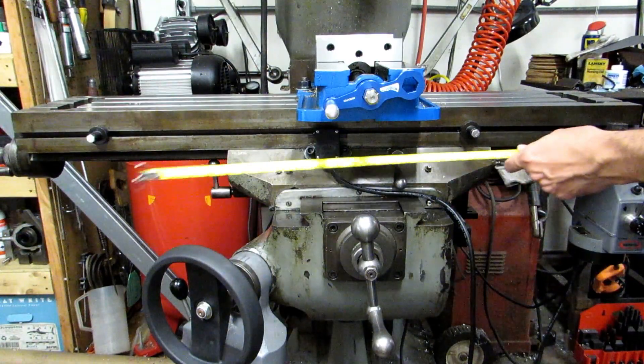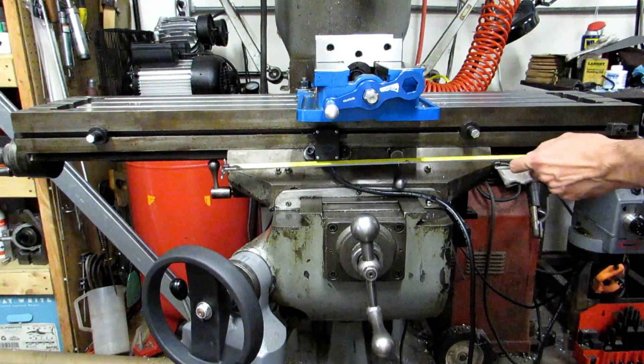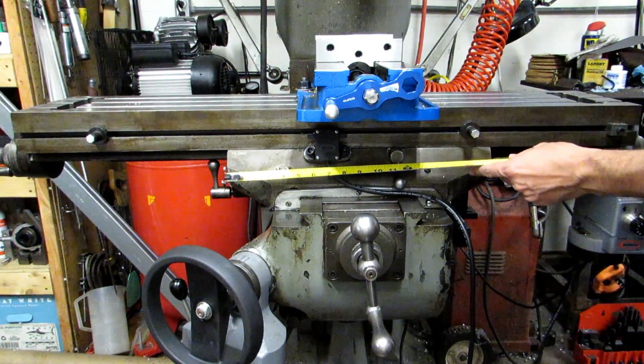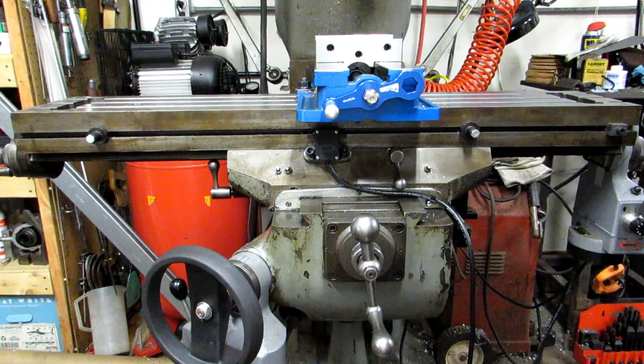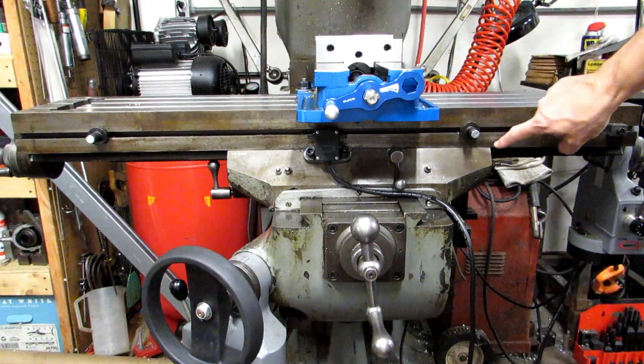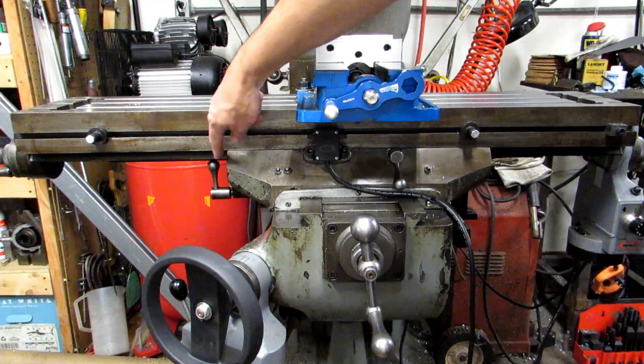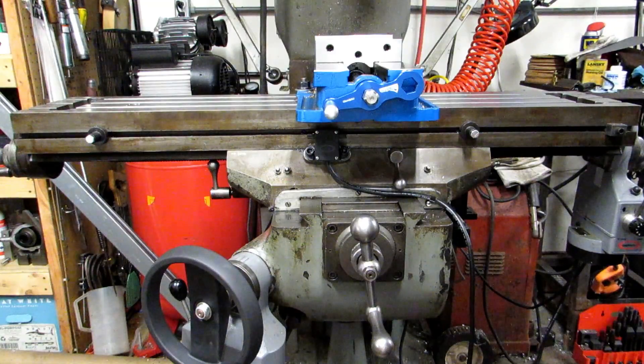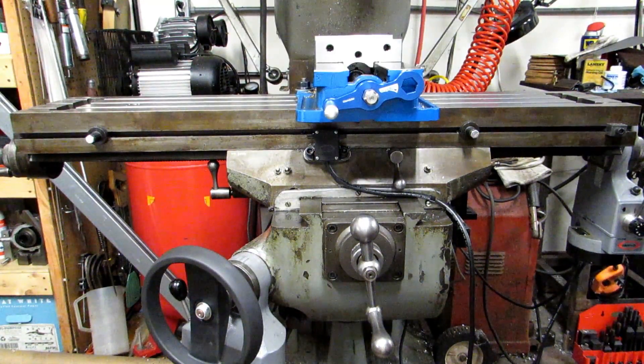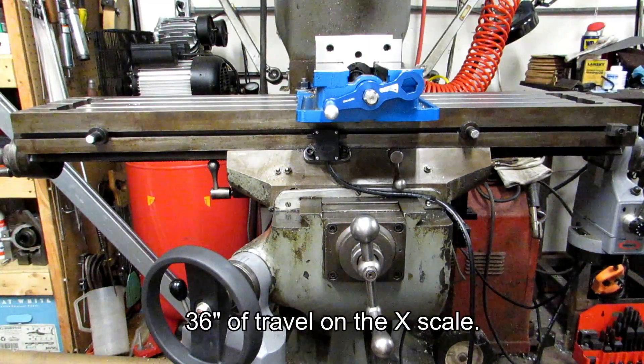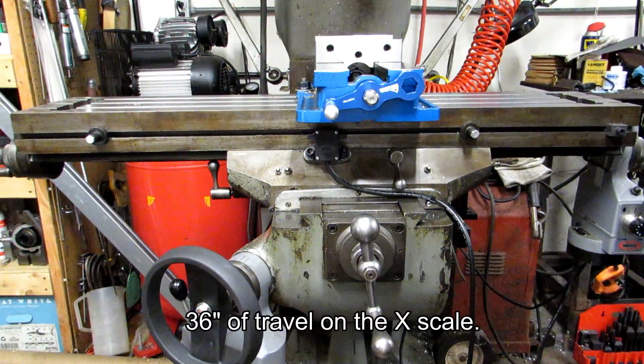What I have is the length of the table minus the width of the saddle here, which the saddle's 18 inches. I've actually got a little bit more because you can actually run the table past the edge of the saddle in both directions. So in this case for a 9 by 42 table Bridgeport or Bridgeport clone I got 36 inches for the X scale and that's going to be plenty.